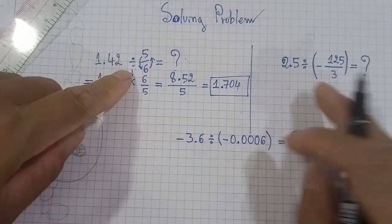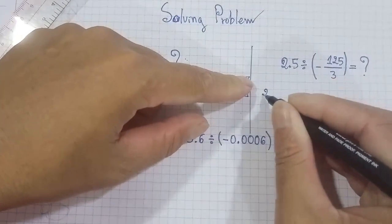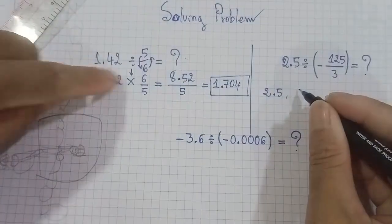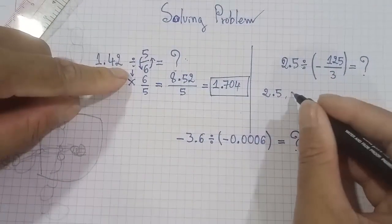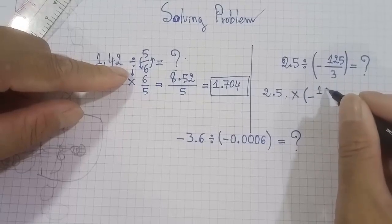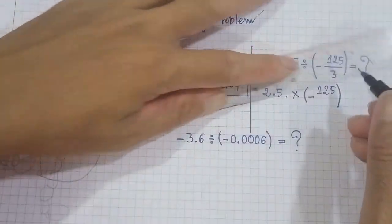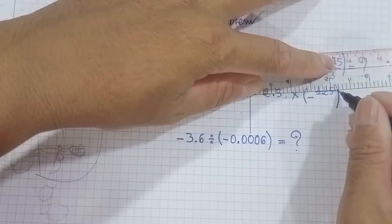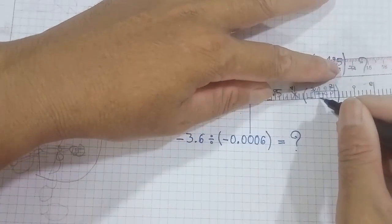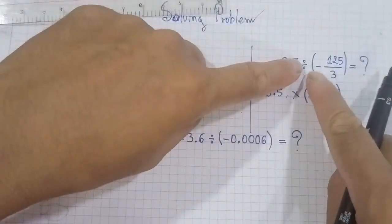We change the divided by to multiply, the same. 2.5, sorry 2.5, we change the same here. So we change to multiply and bracket 3 over 125, like this. Because we change, 3 up and 125 down.